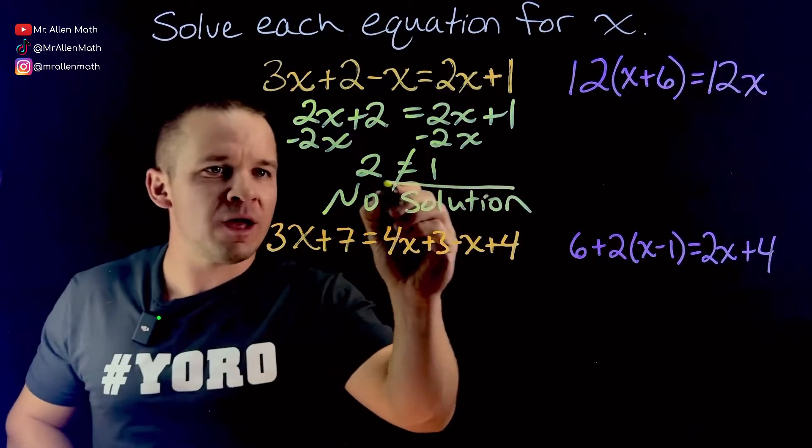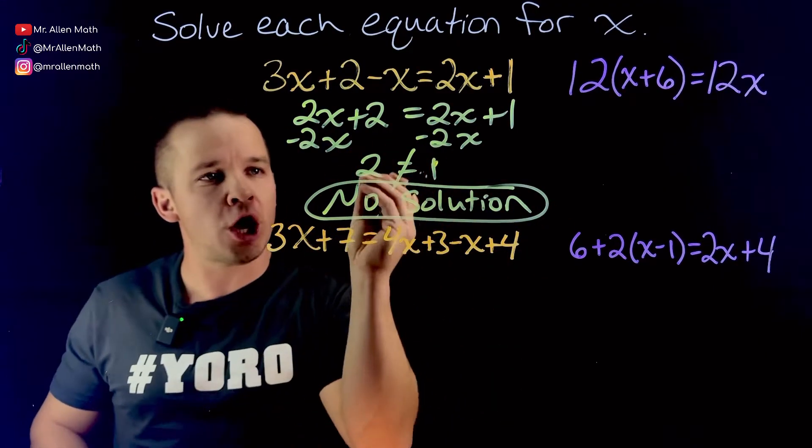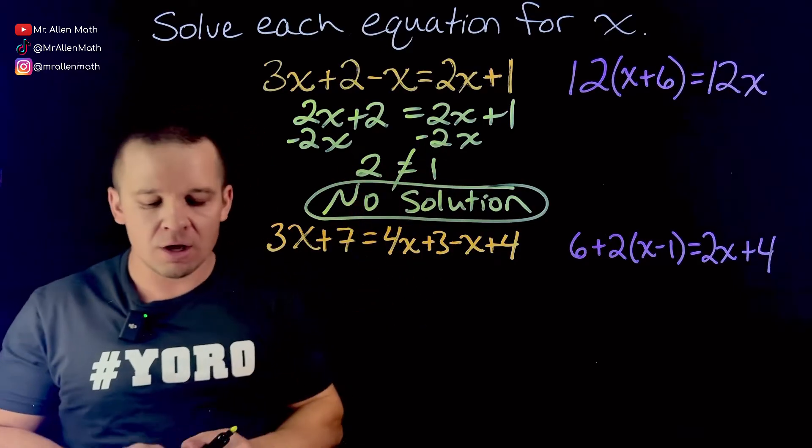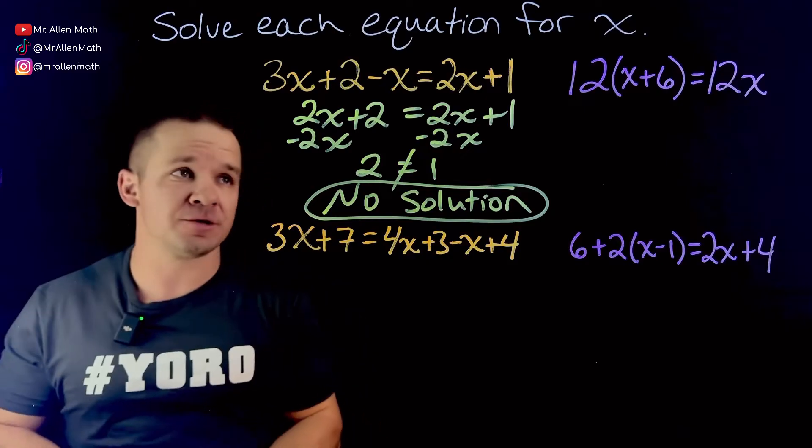So when we have all of our variables cancel out, and we're left with an untrue statement, 2 most definitely does not equal 1. We are gonna say no solution for this one.